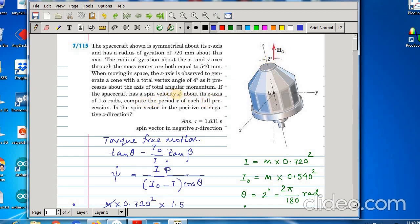If the spacecraft has a spin velocity phi dot about its z axis of 1.5 radian per second, compute the period tau of each full precession. Each full precession means the z rotates about this and comes back to its original position that is one complete revolution. So, what is the period of one complete revolution? Is the spin vector in the positive or negative z direction?